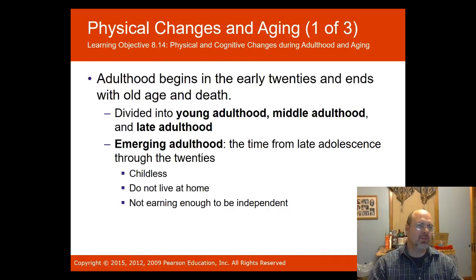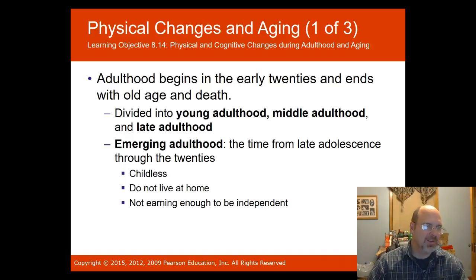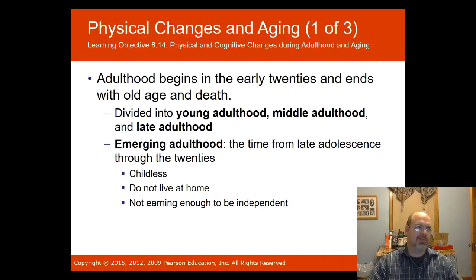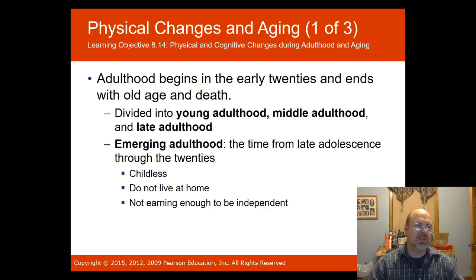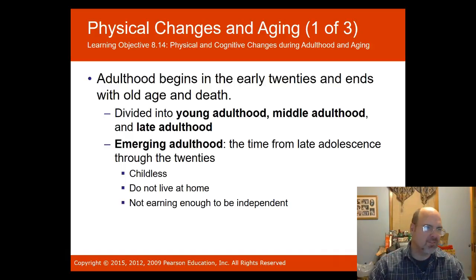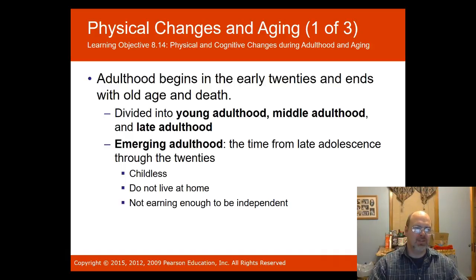Adulthood begins in the early twenties and ends with old age and death. It is divided into young adulthood, middle adulthood, and late adulthood. There is also a newer term called emerging adulthood — a time from late adolescence through the twenties where the person is still childless and may not live at home, but is not yet fully independent.